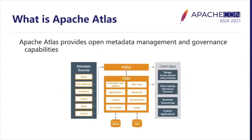Apache Atlas, on the other hand, provides open metadata management and governance capabilities for organizations to build a catalog of their data assets, and to classify and govern those assets, and provide collaboration capabilities for data scientists, data analysts, and governance teams. It automatically collects metadata for Hive, HBase, Spark, and Impala out of the box, and you can also implement your own metadata collector by extending the framework.